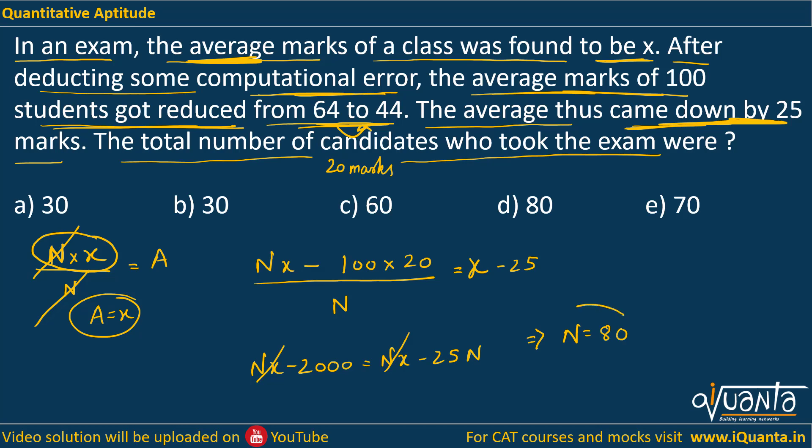So we assumed N was the number of students in the class. So 80 will be the correct answer, option D. I hope this is understood. If there is a doubt, please comment. Thank you.